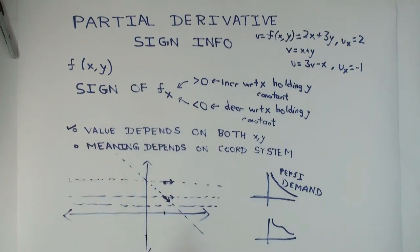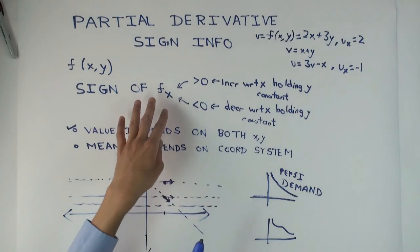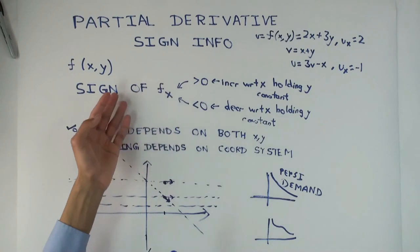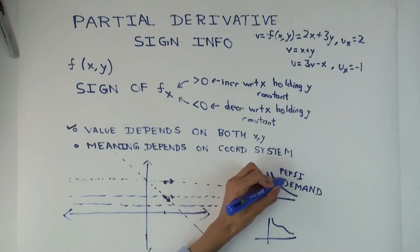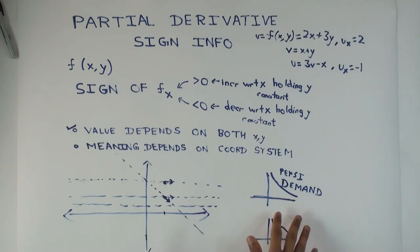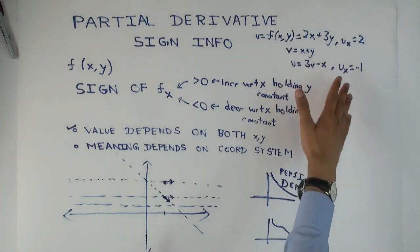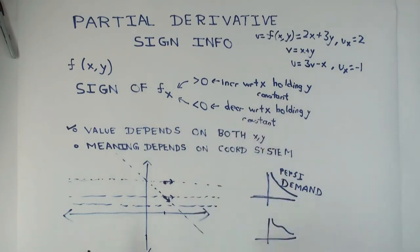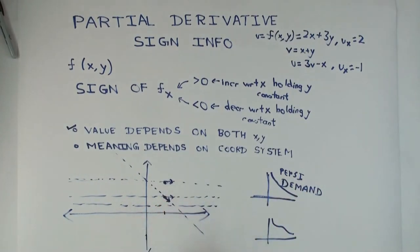The sign of the partial derivative really depends on how you coordinatize your system. Therefore, when people talk of things like the law of demand, they really need to be very specific about what those variables are which are held constant — relative to what other things are we holding constant, with respect to which we have this downward sloping demand curve. If you change too much what you're holding constant, the partial derivative could flip from being negative to being positive, because that determines the actual direction you're moving in the domain picture.